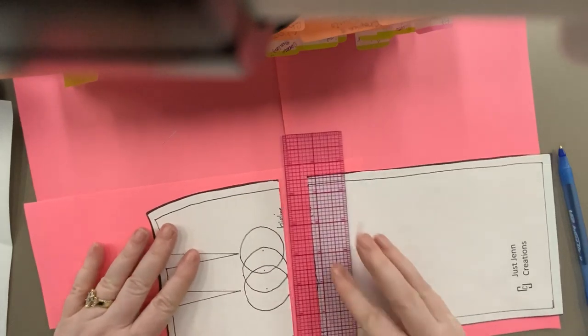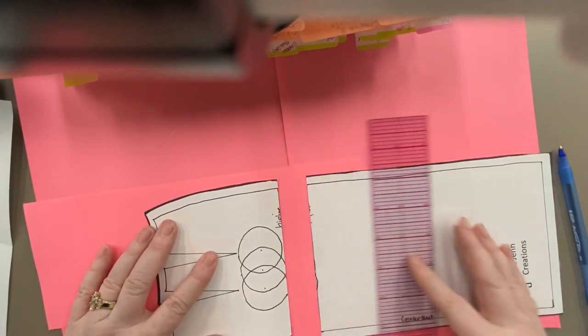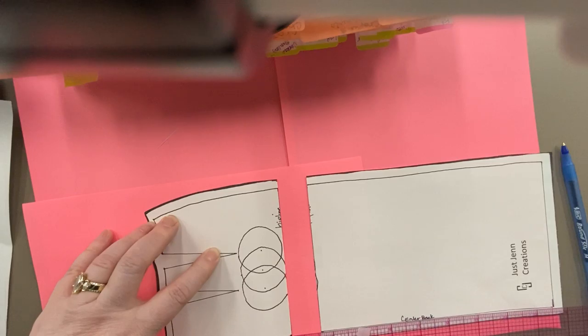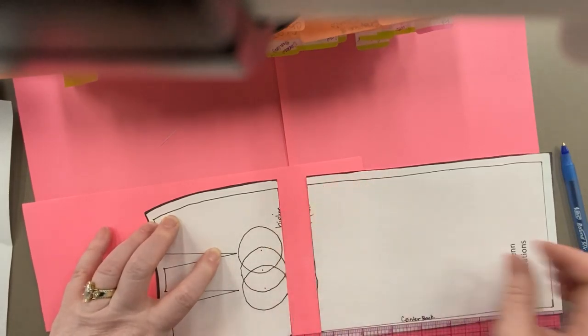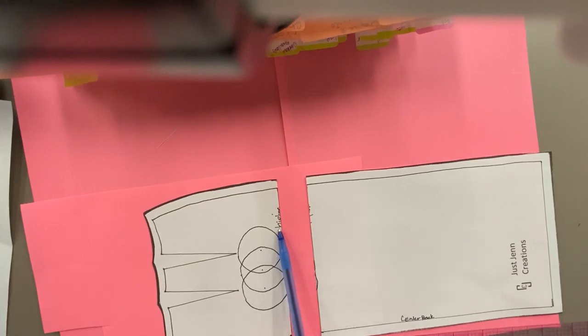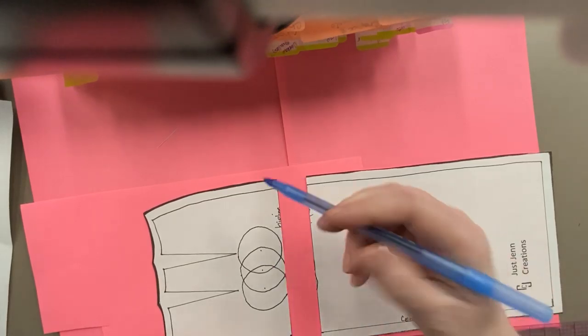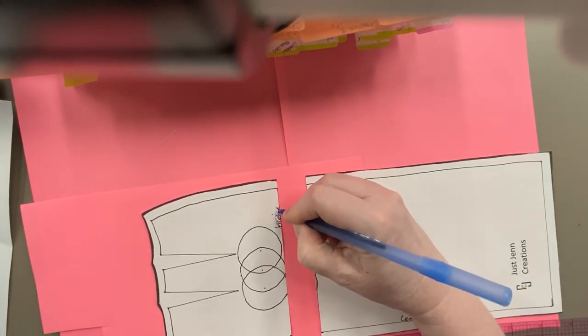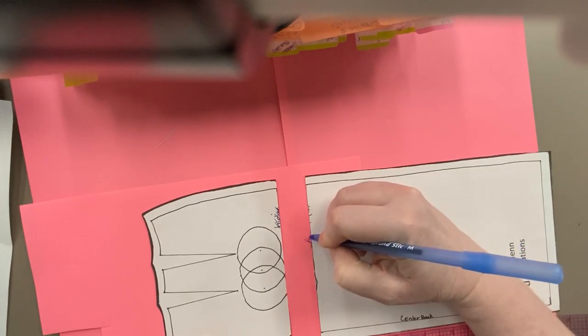Make sure we're moving an inch and that my center back line is still square. And then my hip line would no longer be here. Because I just lengthened my hip line. This is the new hip line.